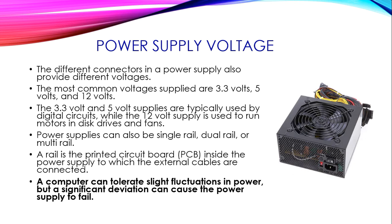In a single power supply, there are many different types of connectors, each offering different voltages. It is very important to know where to use them. The most common voltage supplies are 3.3V, 5V, and 12V. The 3.3V and 5V supplies are typically used by digital circuits, while the 12V supply is used to run motors in disk drives and fans. A power supply can also be single rail, dual rail, or multi-rail.